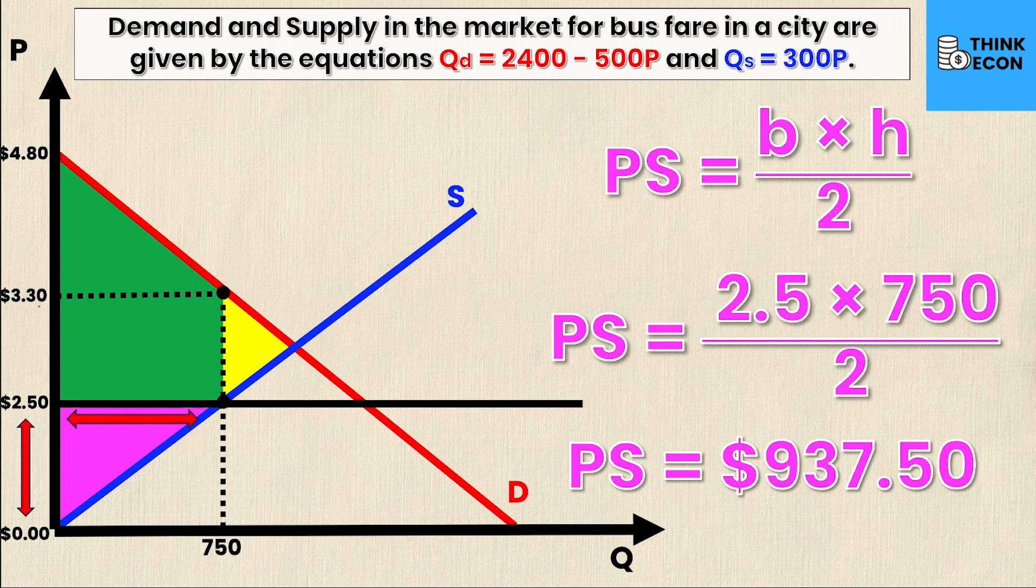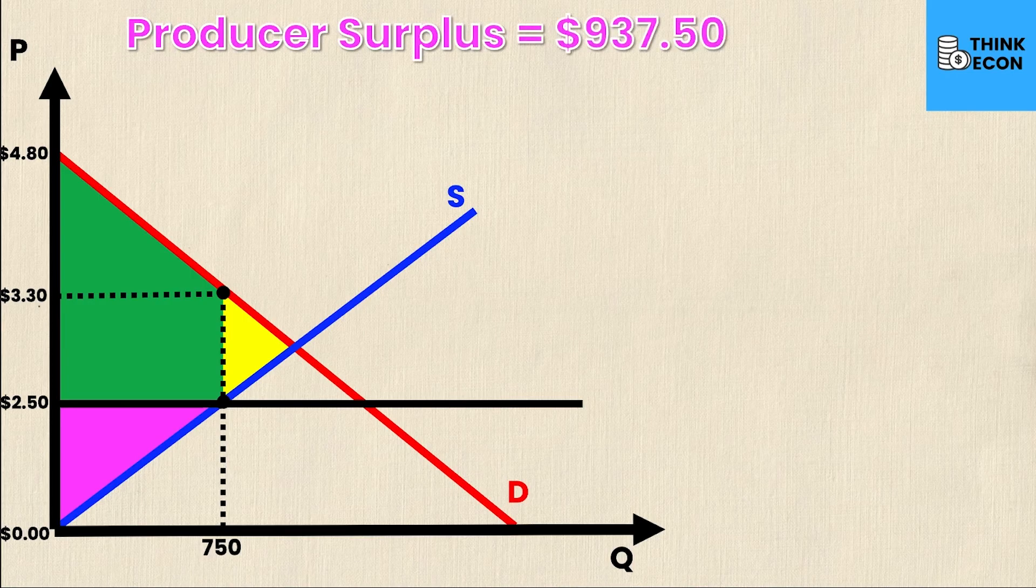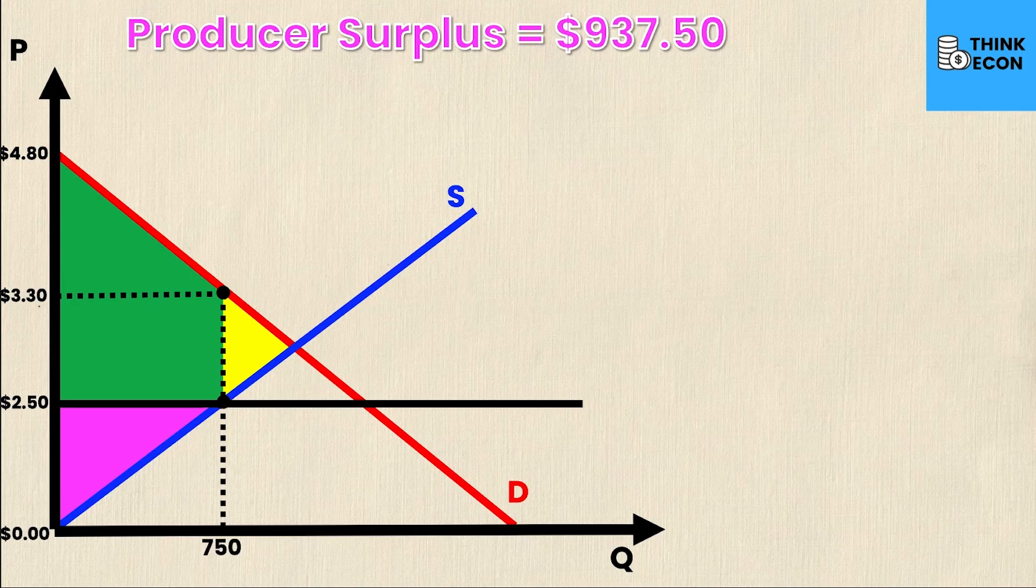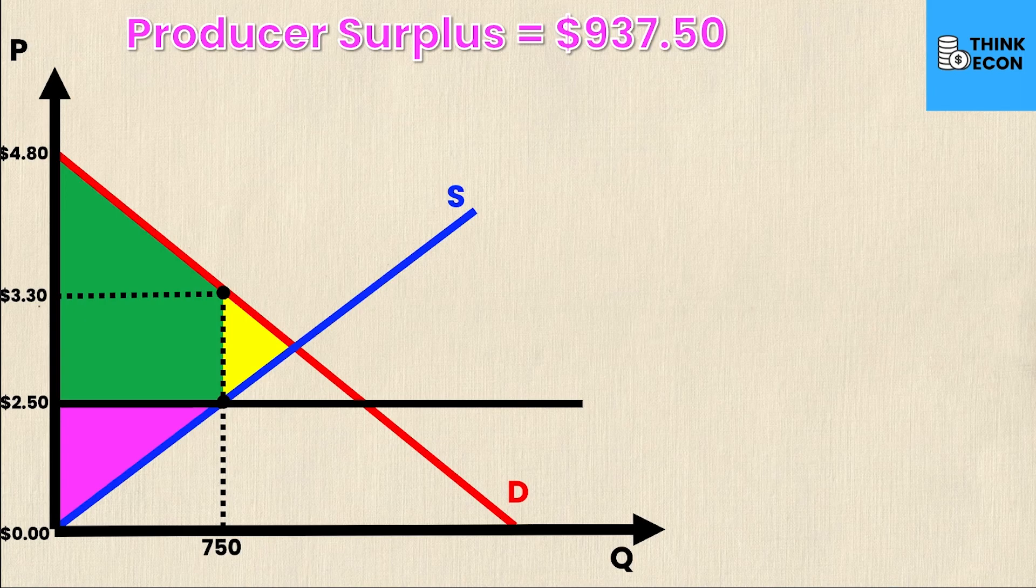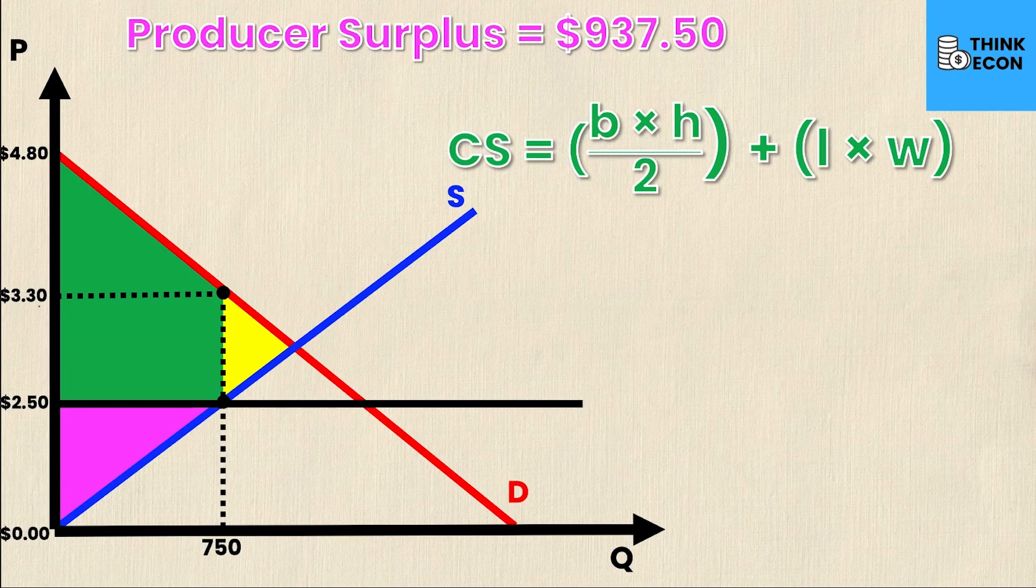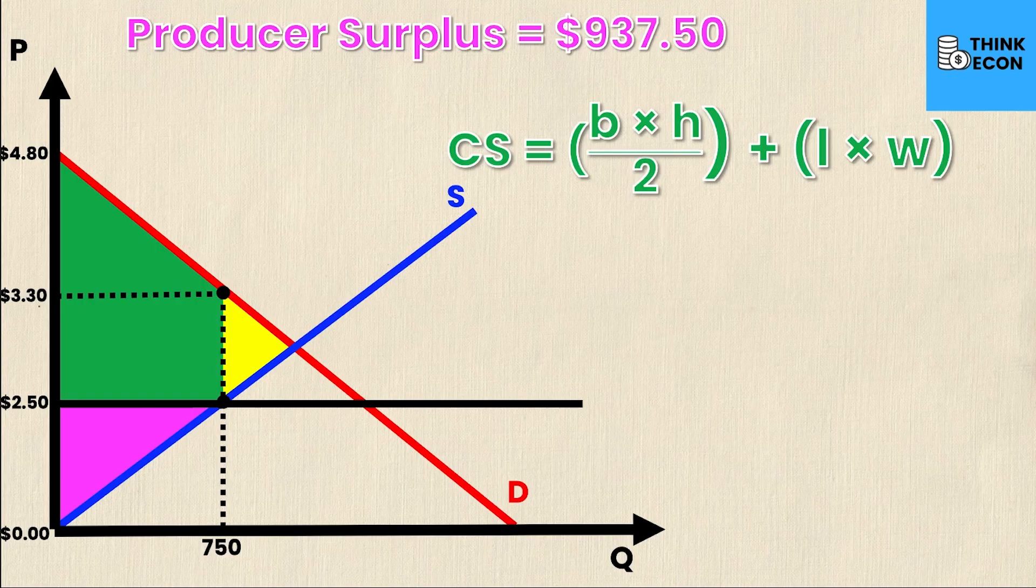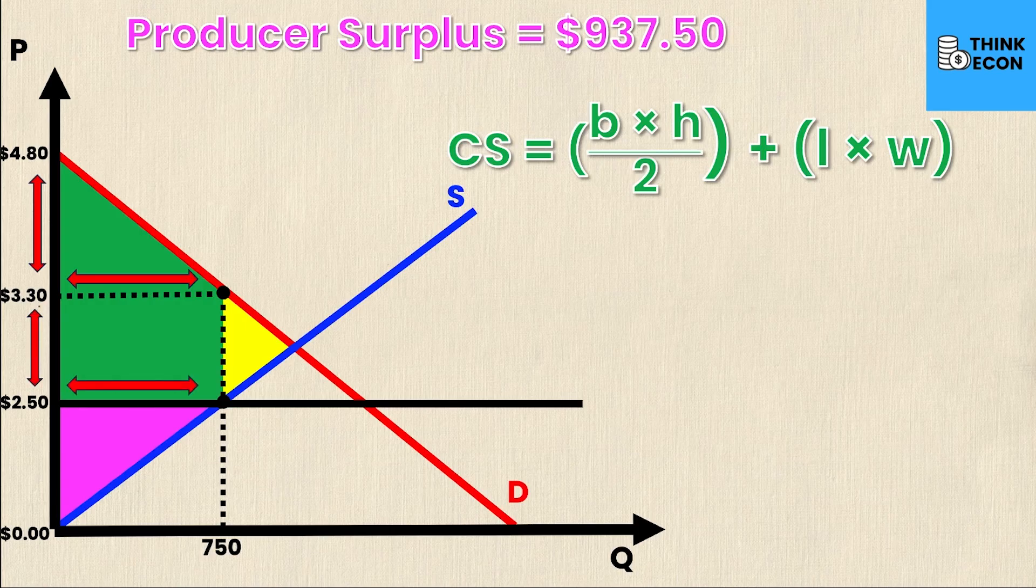But that's the easy one because it was simply finding the area of a triangle. What about the consumer surplus? This is a compound shape—two normal shapes put together, a triangle and a rectangle. For consumer surplus I need to calculate the area of both: base times height divided by two for the triangle, and length times width for the rectangle, then add those areas together.